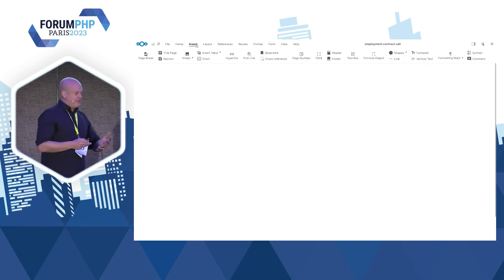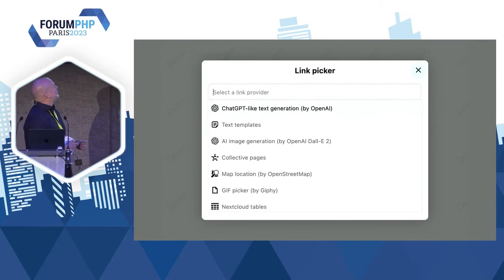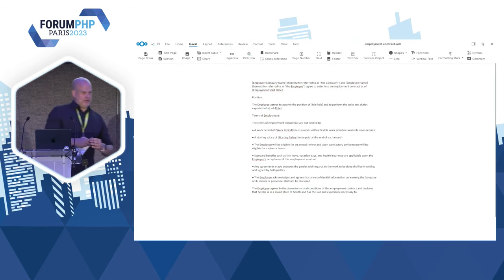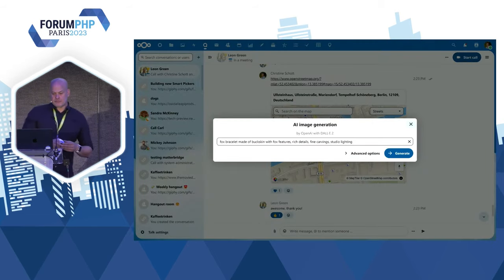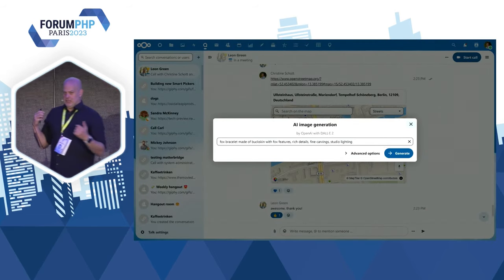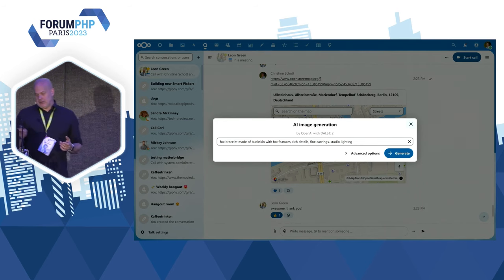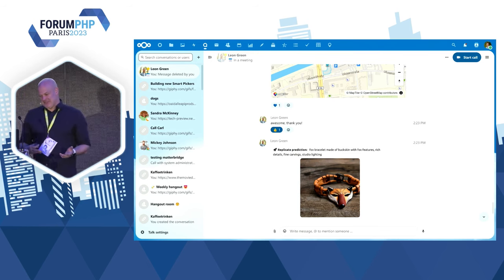In Nextcloud Office, there's a button to use AI services — you can say 'generate a contract' and it generates one directly in the office document, which you can then refine. In a chat conversation, if you want to visualize something, you can give a prompt and an image is generated and put directly into the chat. Again, unlike OpenAI or Google or Microsoft, all this data stays local and is not sent to the US.